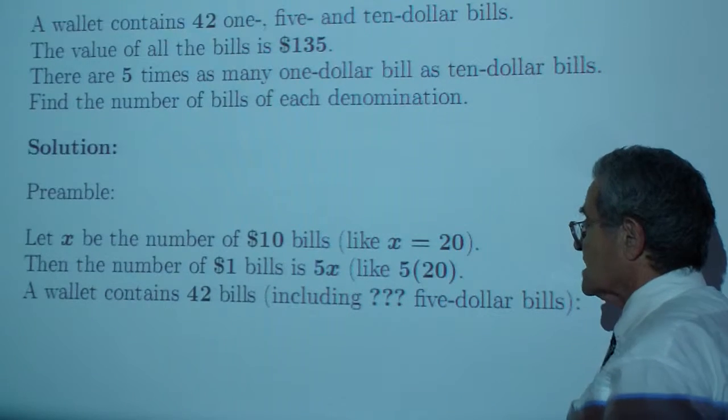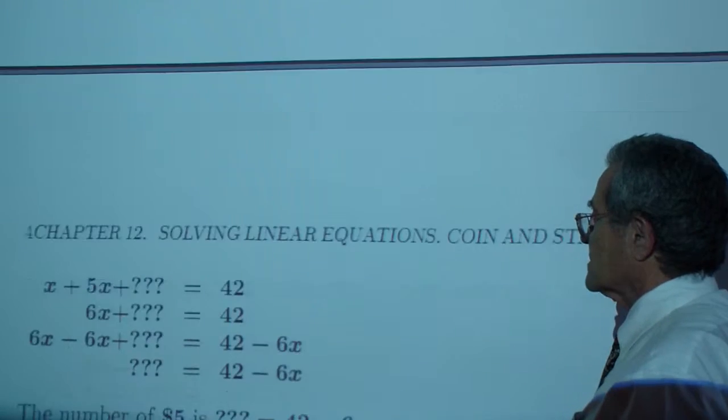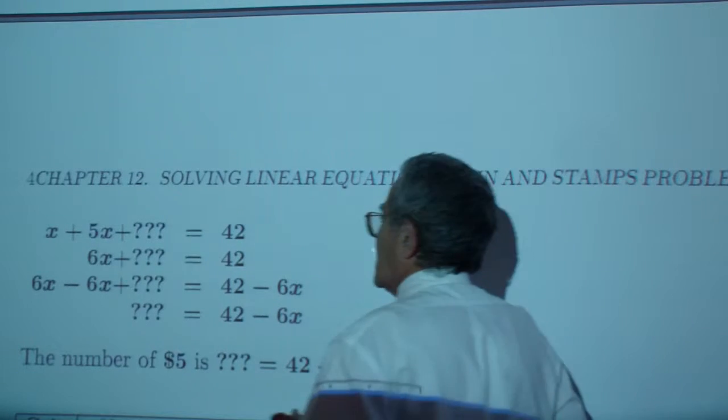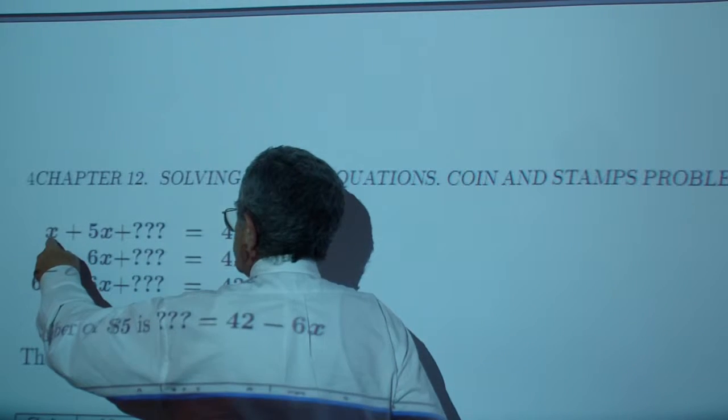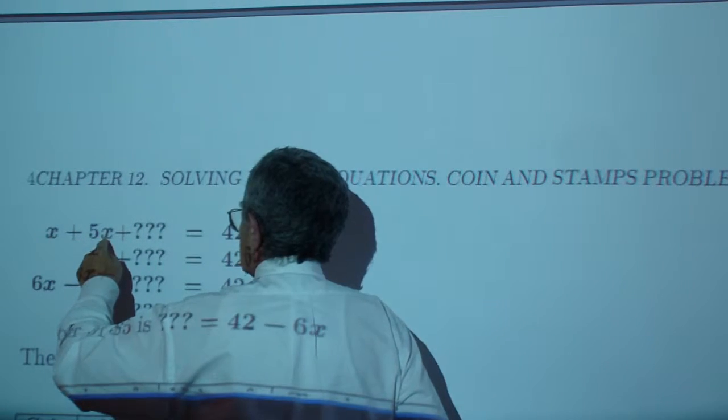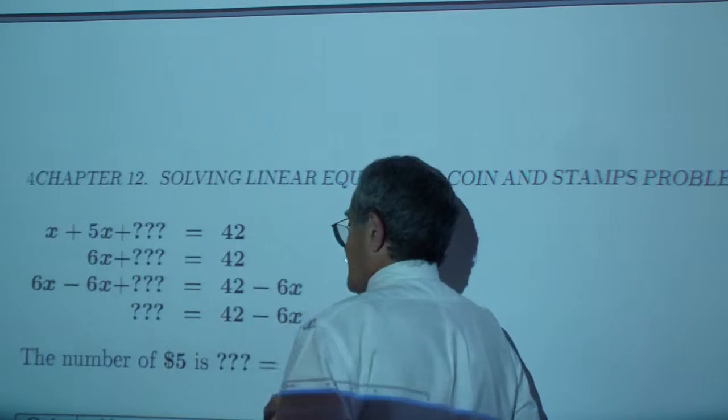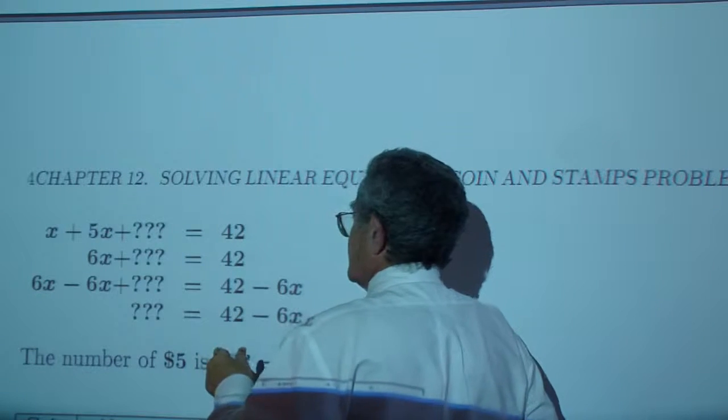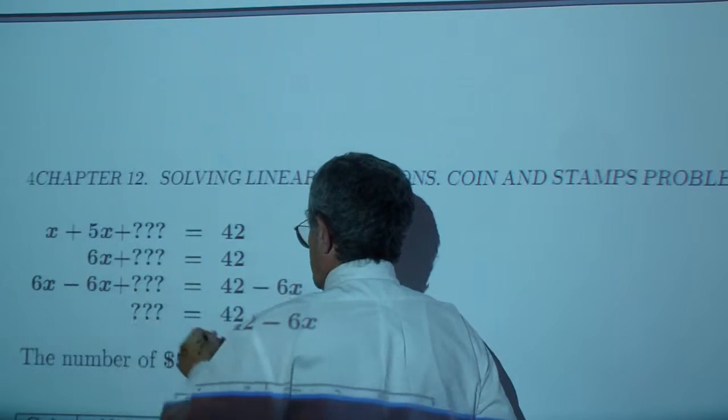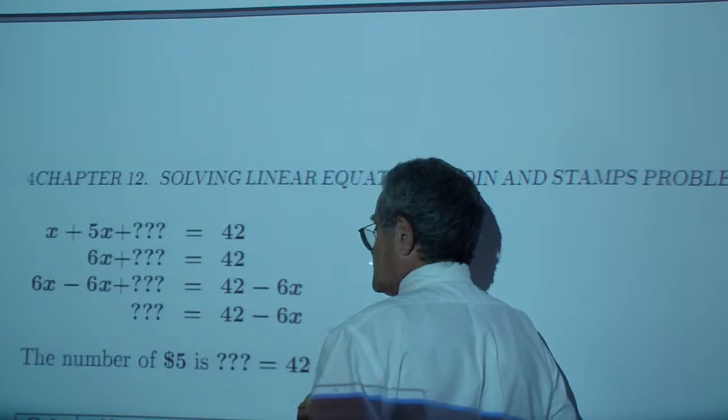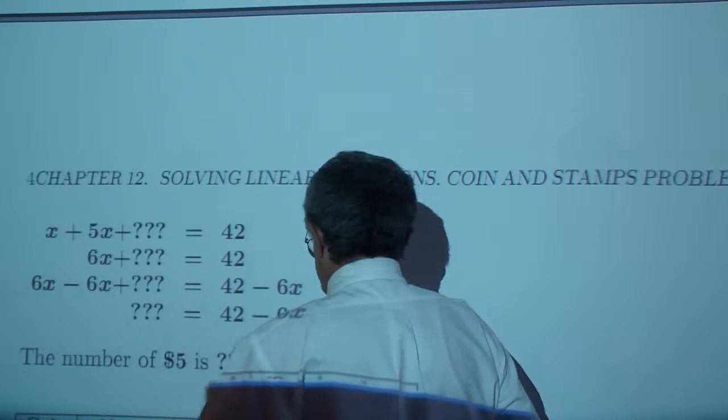Well, I'm not sure. However, I know how many $1 bills, how many $10 bills, and how many $5 bills. If I subtract 6X from both sides, it will be 42 minus 6X. That many $5 bills.